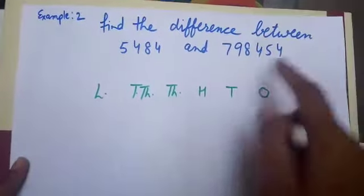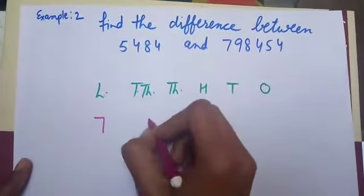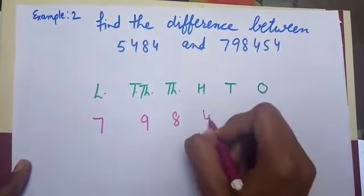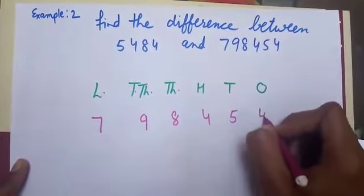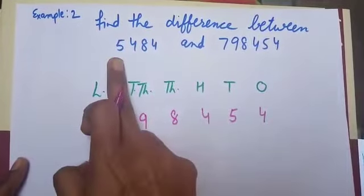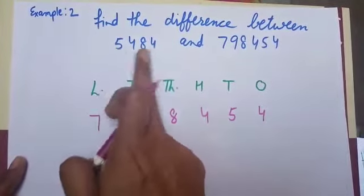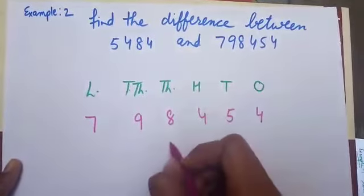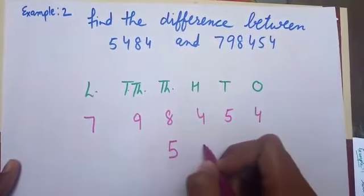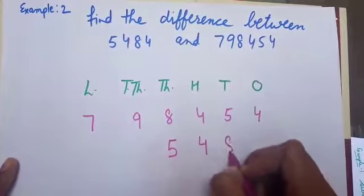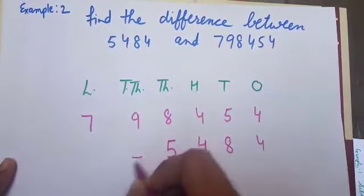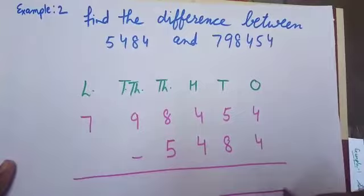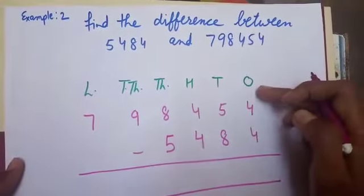The greater number is 7,98,454. Then I will write the smaller one. The smaller number has 4 digits, so I will start writing it from 1000 place. 5,484. Now I will start subtraction from 1's place.